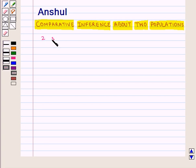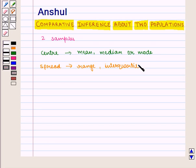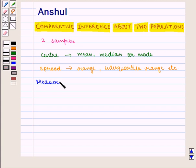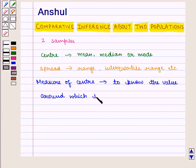Whenever two samples are given, we can find its center using mean, median or mode, and we can also find its spread using range, interquartile range, etc. Measure of center helps us to know the value around which most of the values in the data lie.